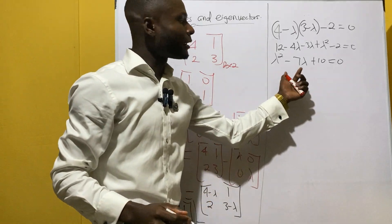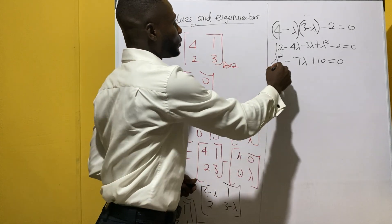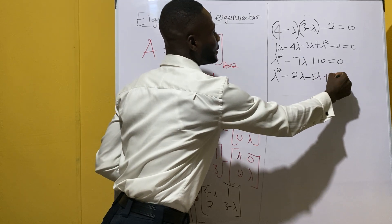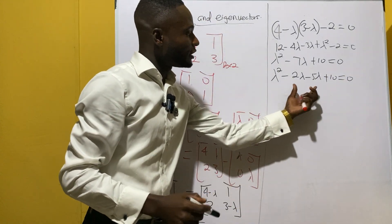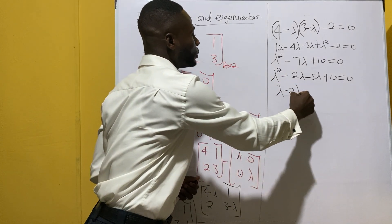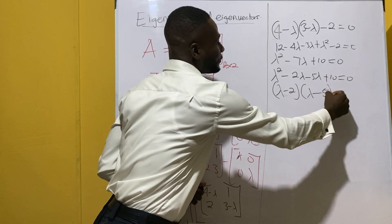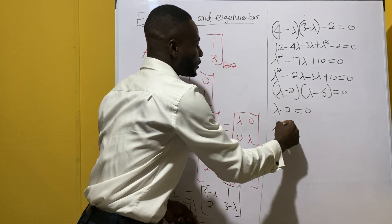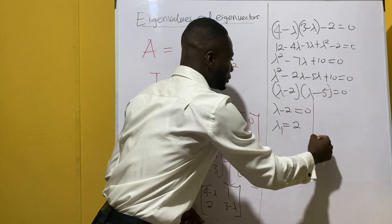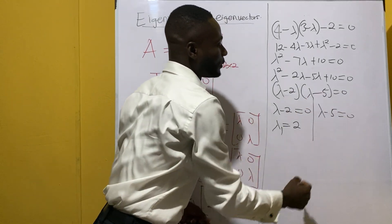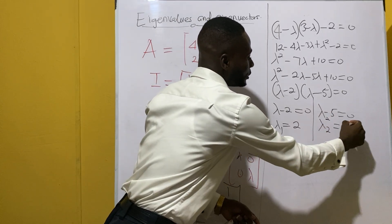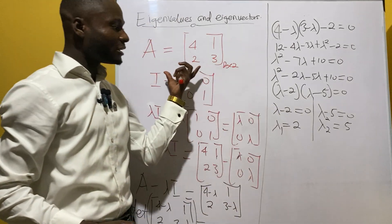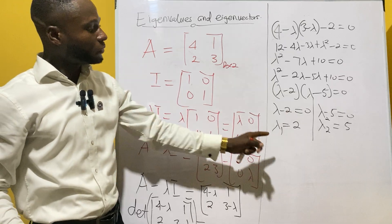We look for two numbers that fit minus 7λ and plus 10, which gives us −2λ − 5λ + 10 = 0. Factoring: (λ − 2)(λ − 5) = 0. So lambda one equals 2 and lambda two equals 5. These are the eigenvalues of this two by two matrix.